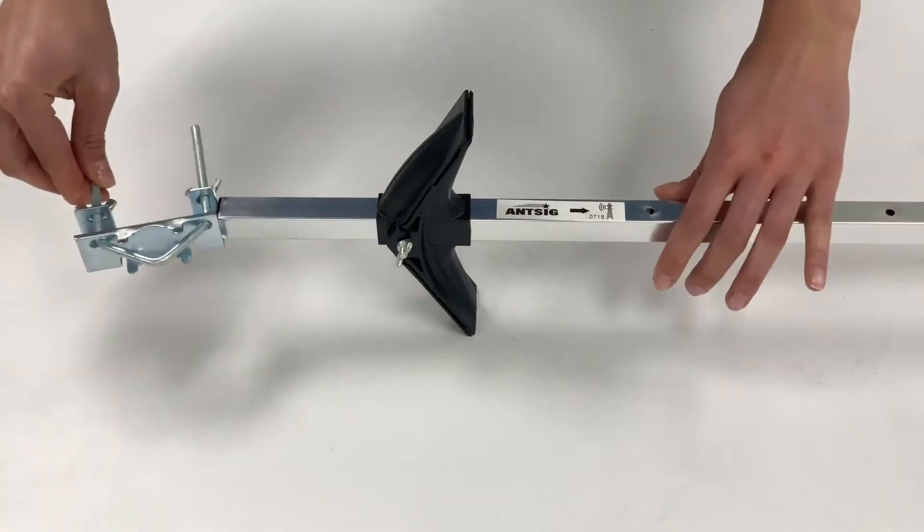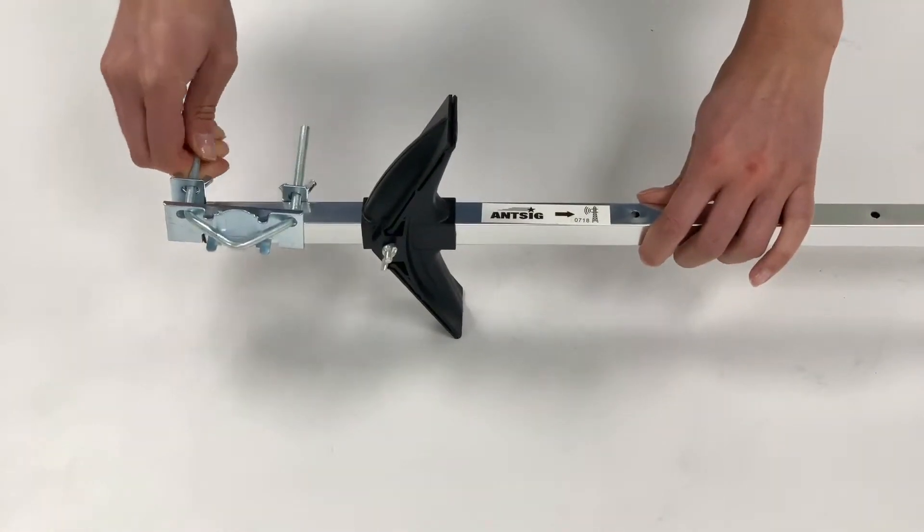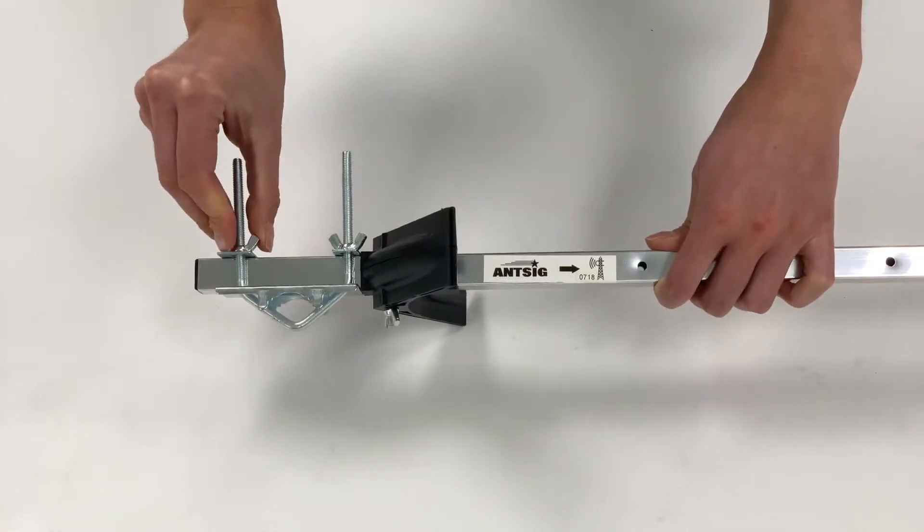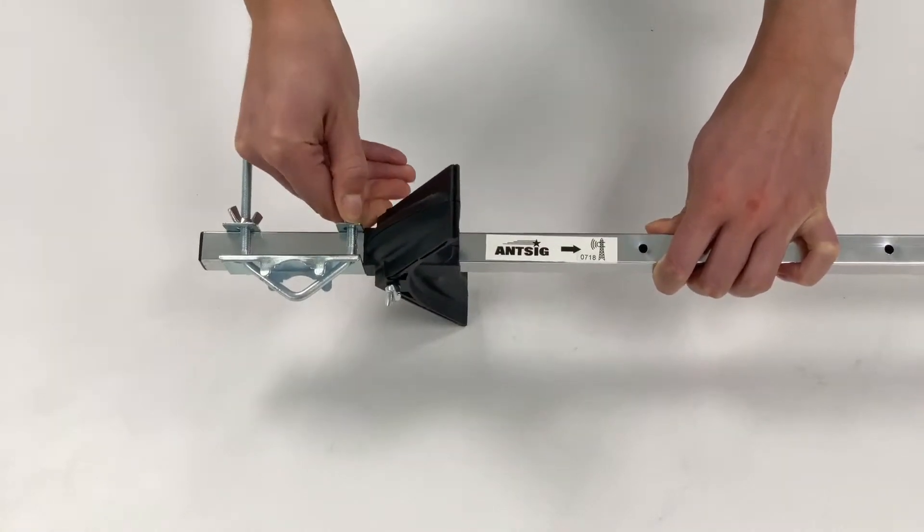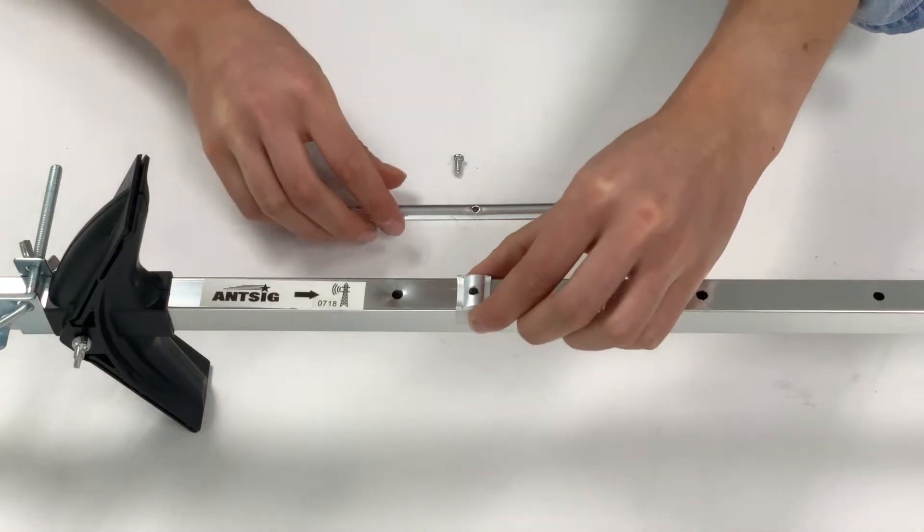Then assemble the antenna boom via the two bolts and wing nuts, ensuring the upper and lower support brackets seat over the boom squarely. Then fit the seat over the boom here.